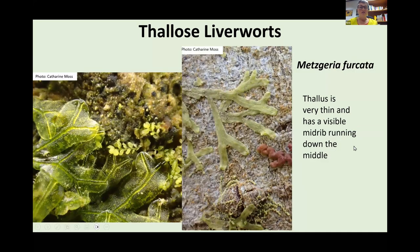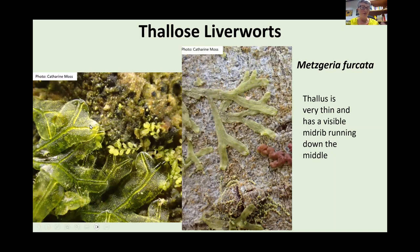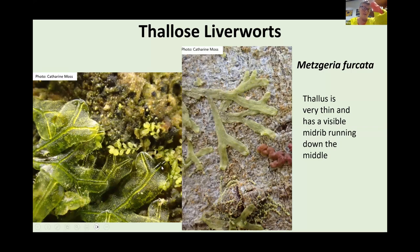By contrast, if you look at this very thin liverwort, it's still a thalloid liverwort but has a very thin thallus which is only one cell thick. You can see from the picture on the left how thin it is — you can almost see through it, and in this case it has a midrib running down the centre. So two very different thalloid liverworts.